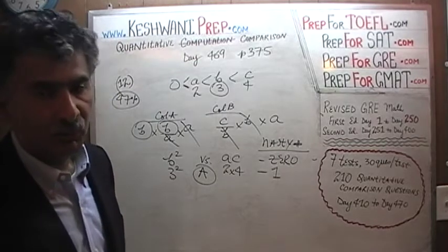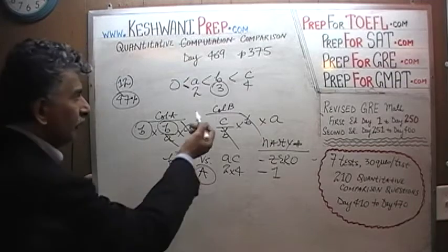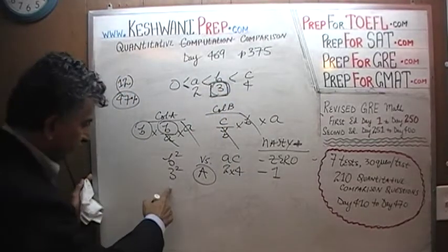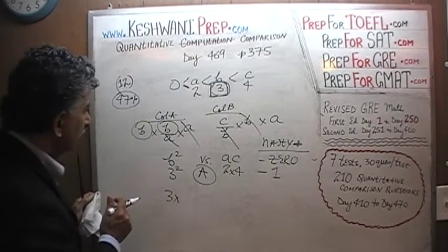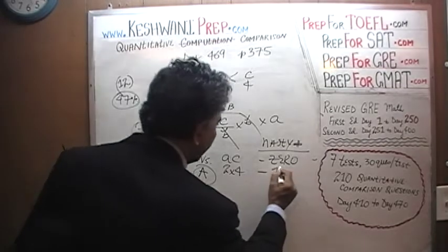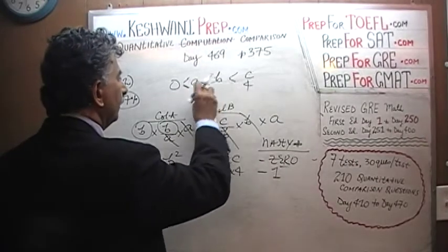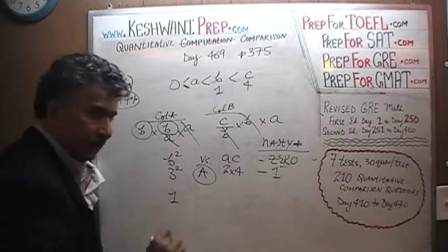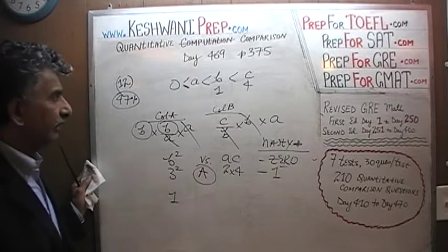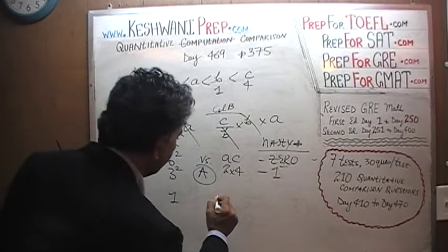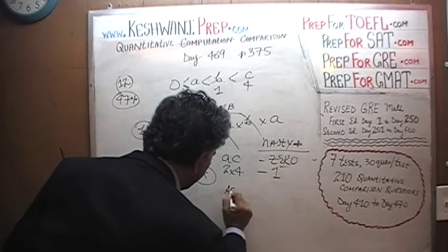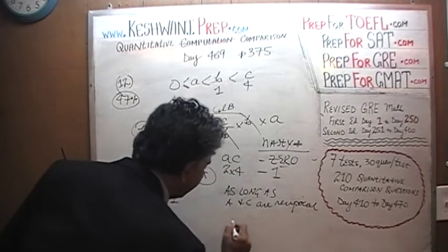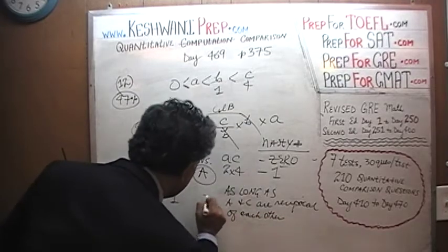Can we try one? Watch what happens. Let's plug in 1 for B. Then B squared equals 1. And for A times C — can we make that equal to 1 also? The answer is yes. As long as A and C are reciprocals of each other, their product is going to be 1, and the answer is going to be C.